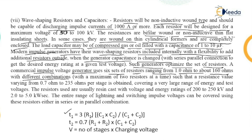We are going to use a few equations to solve numericals based on the wave shaping elements. T1 = 3 × R1 × (C1×C2)/(C1+C2). T2 = 0.7 × (R1+R2) × (C1+C2). V = number of stages × charging voltage. These equations will be used to attempt the numericals discussed in the next lecture. That concludes the understanding of the Marx circuit and modified Marx circuit.